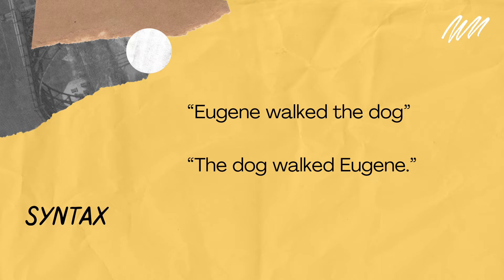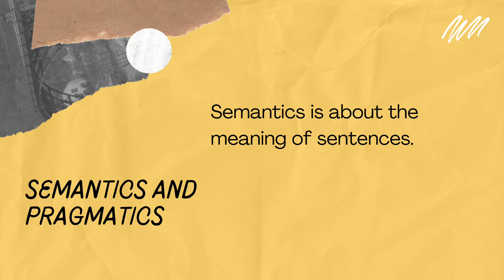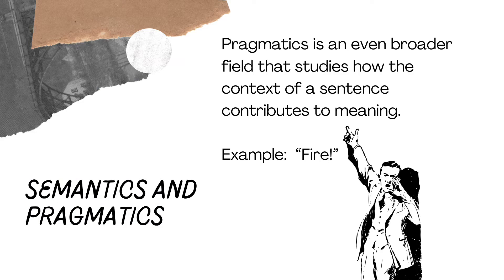Semantics is about the meaning of sentences. Someone who studies semantics is interested in words and what real-world object or concept those words denote or point to. Pragmatics is an even broader field that studies how the context of a sentence contributes to meaning. For example, someone shouting 'FIRE' has a very different meaning if they are in charge of a seven-gun salute than if they are sitting in a crowded movie theater.